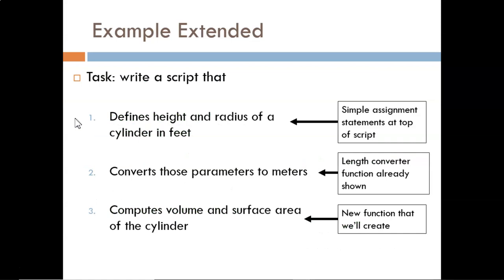Here we have the major steps that we want a set of codes to accomplish. First we will define a height and radius of a cylinder in feet. Then we will convert those parameters into meters. Finally we will compute the volume and surface area of the cylinder.